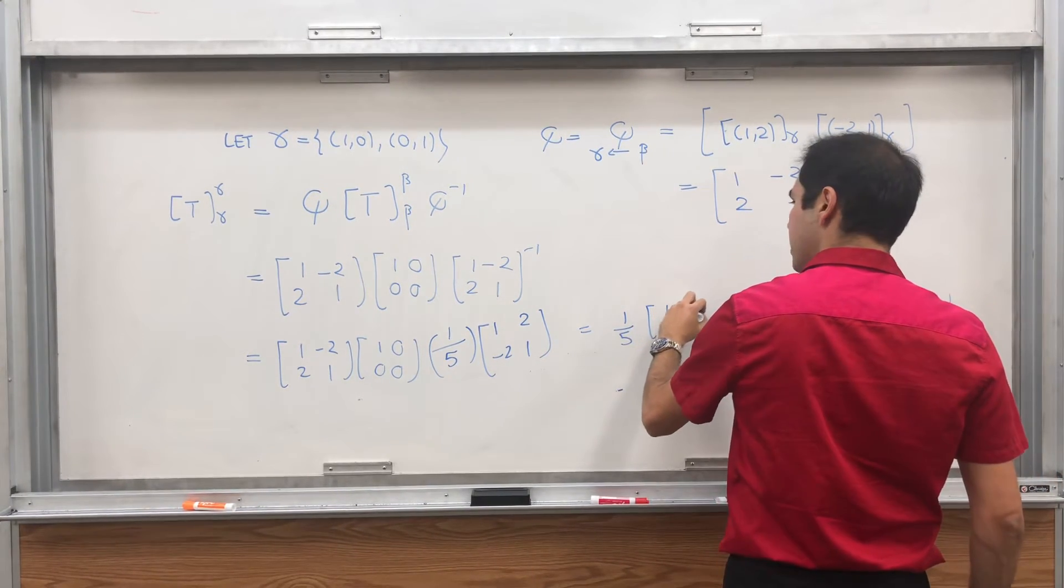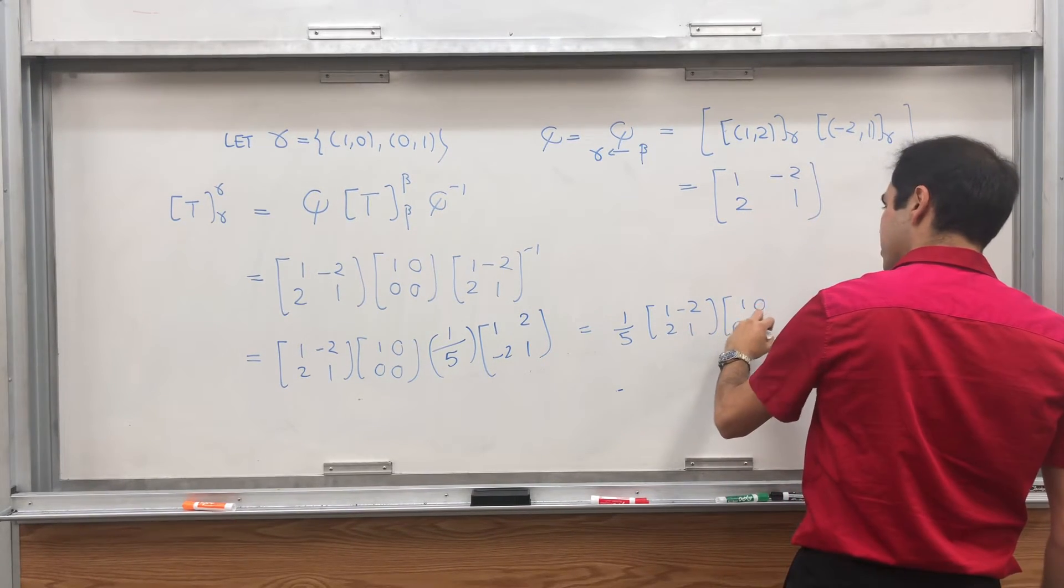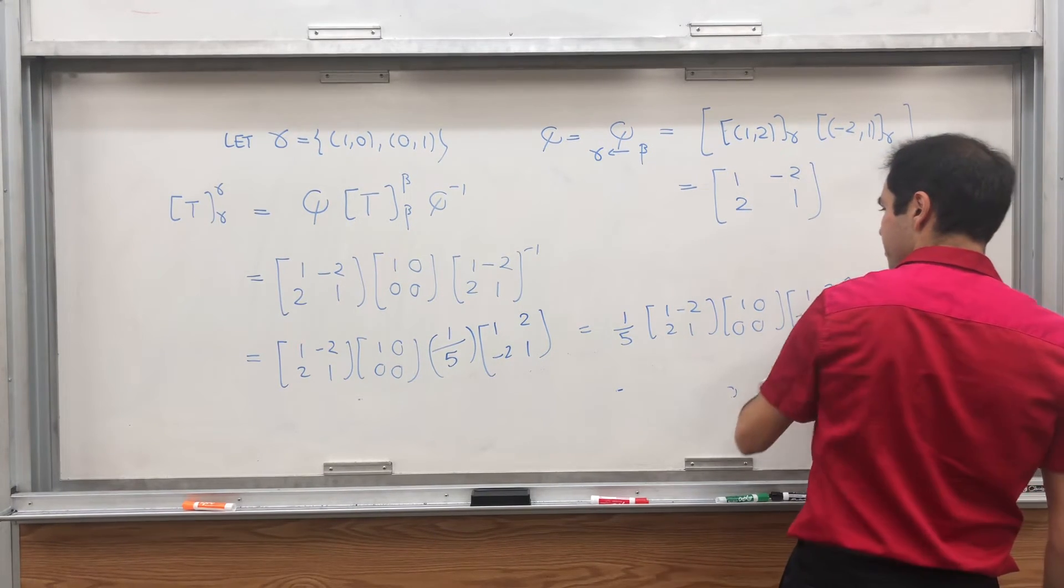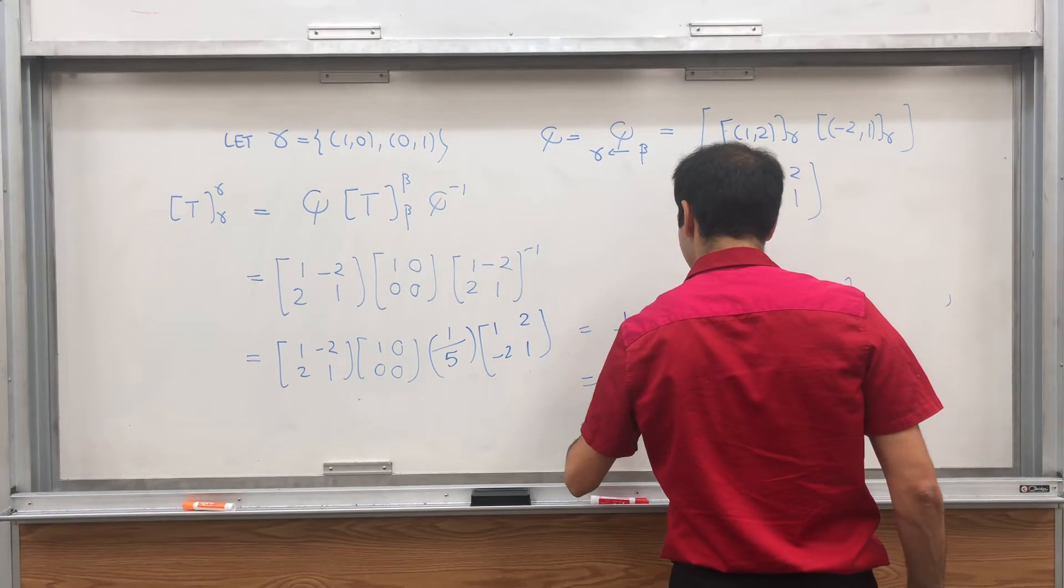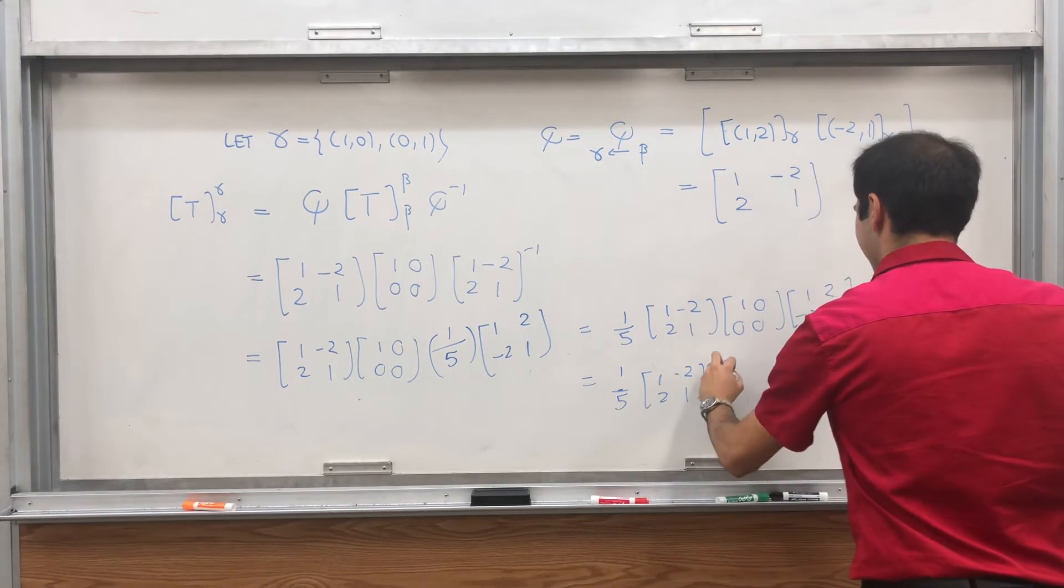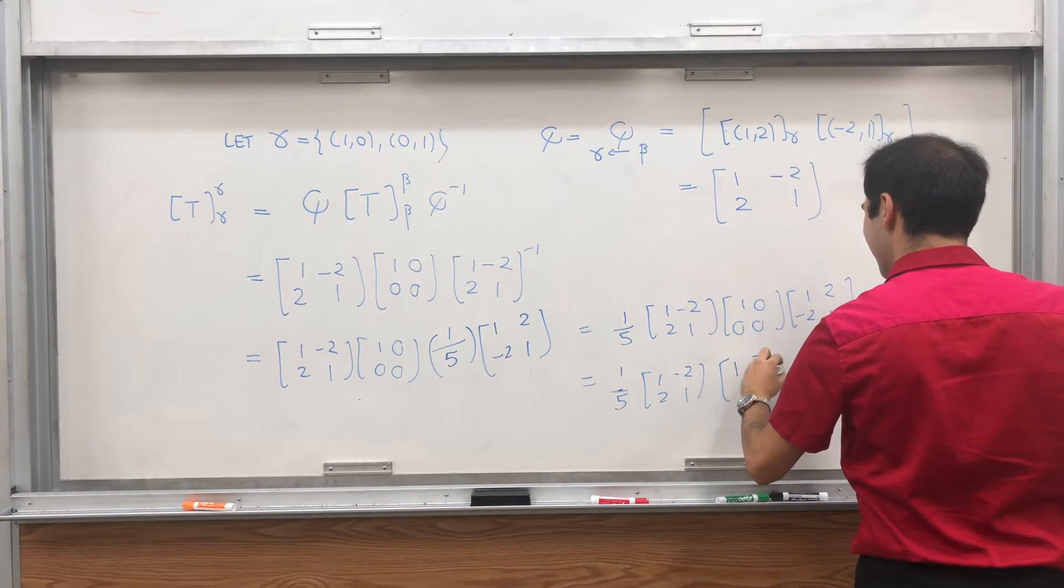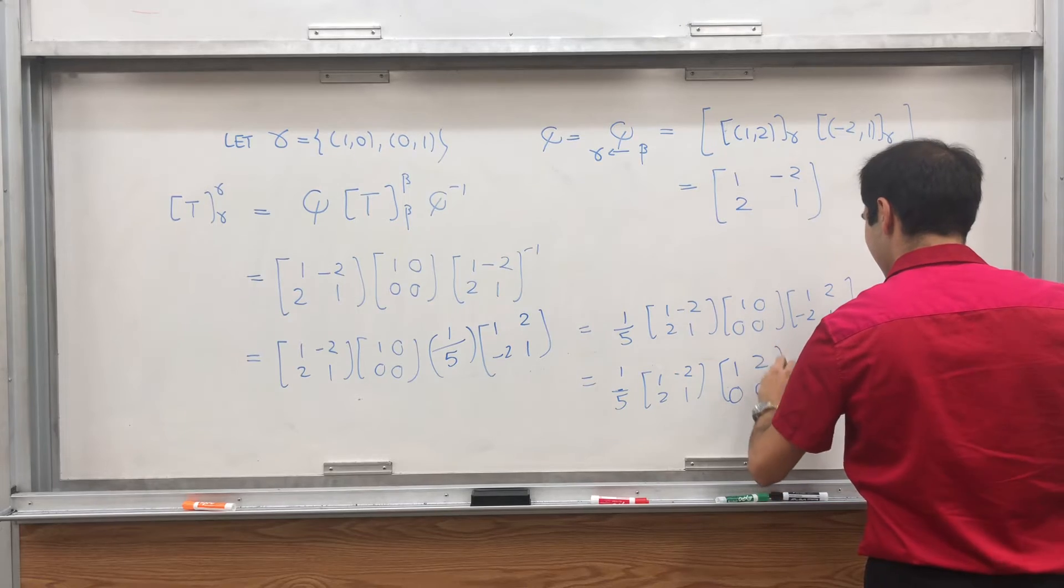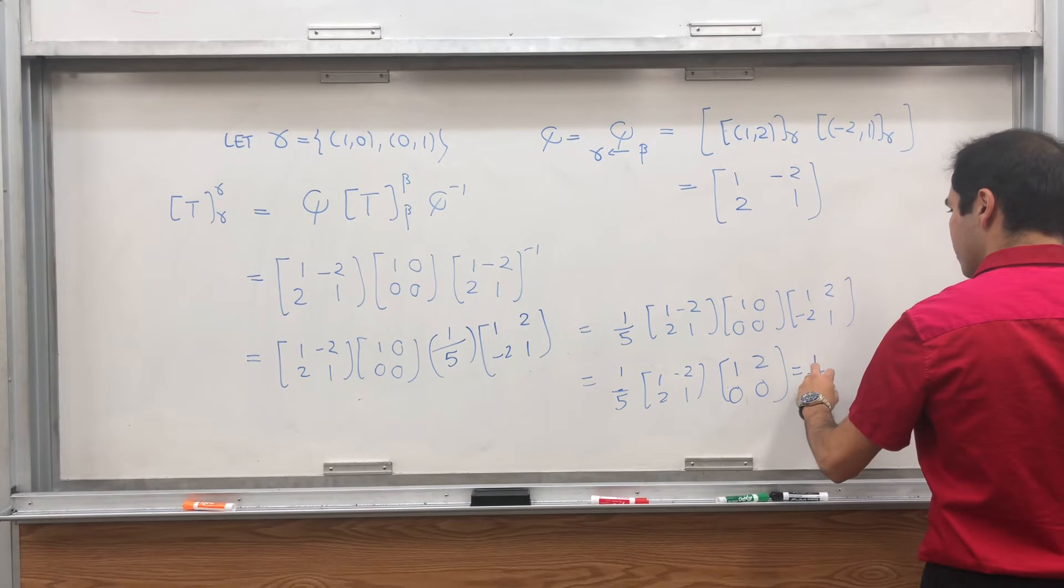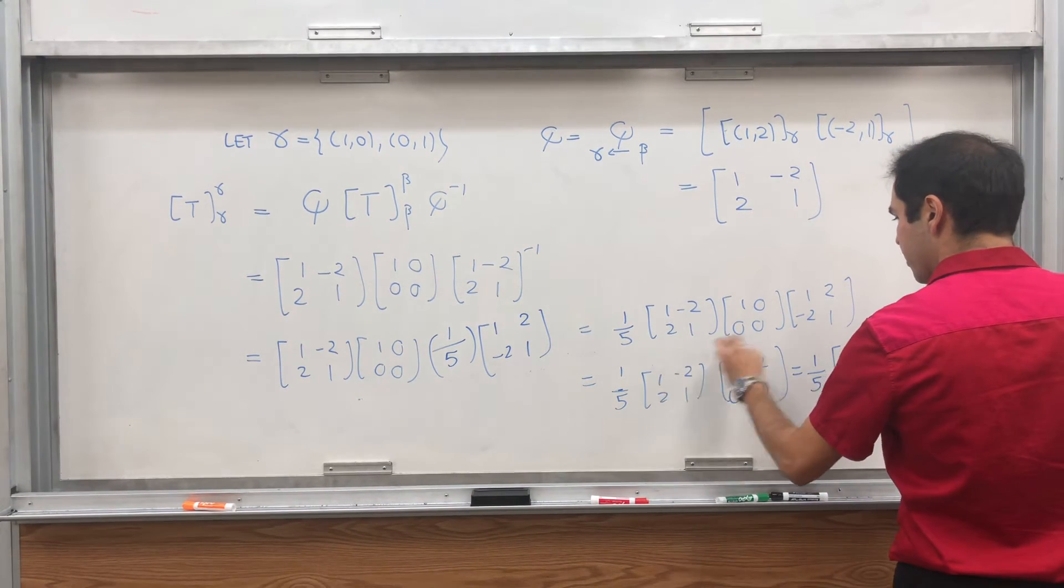So let's calculate this. It's 1 fifth times 1, minus 2, 2, 1, times 1, 0, 0, 0, times 1, 2, minus 2, 1. And that's 1 fifth times 1, minus 2, 2, 1. It is precisely the first row. And then let's just calculate that.